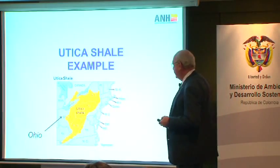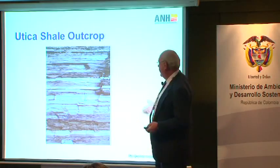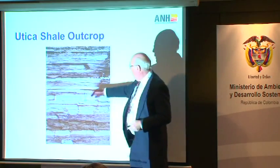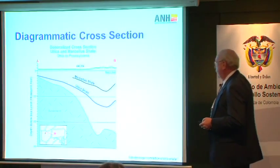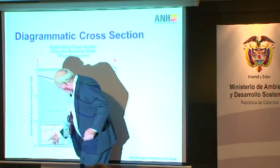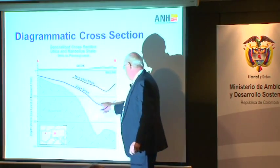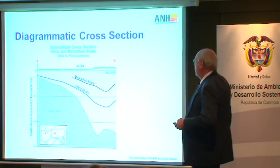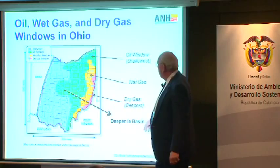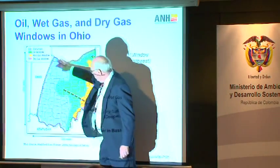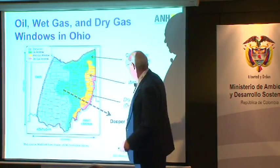The Utica Shale is in the northeastern United States, in the states of Ohio and Pennsylvania. Another typical organic shale outcrop with very thin beds from individual turbidity currents. In a cross section from northwest to southeast, the Utica Shale becomes deeper to the southeast and goes higher up the geothermal gradient, showing the kerogen window, the oil window, wet gas, and a strip of dry gas near the state line with West Virginia.